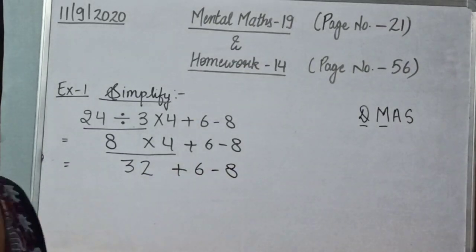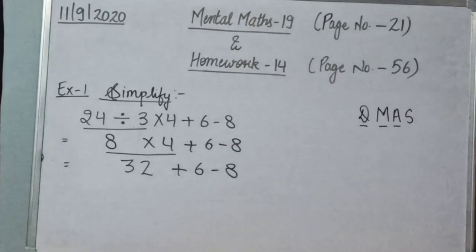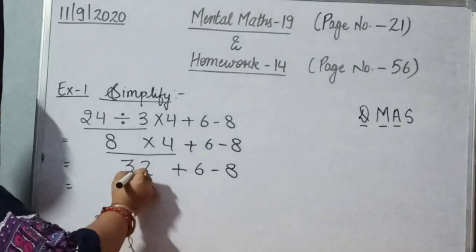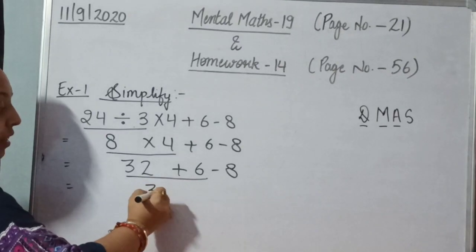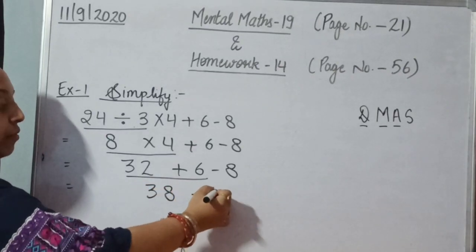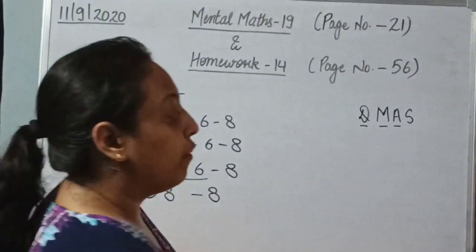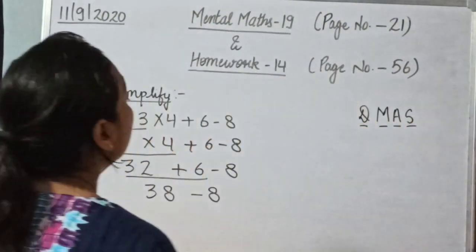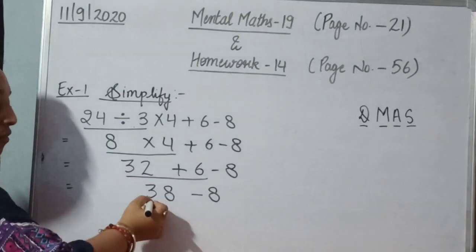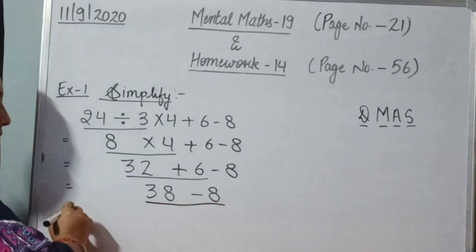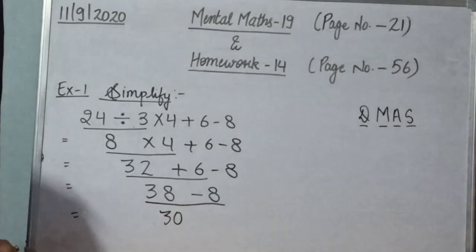Now in third step, we need to apply addition. In this question, we need to add 32 plus 6. After adding it, I have got 38, and then rest will be copied. At last step, we will do subtract. We can see that here we need to subtract 38 minus 8. So the outcome is 30.